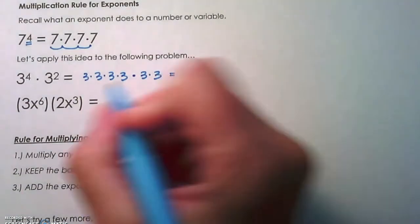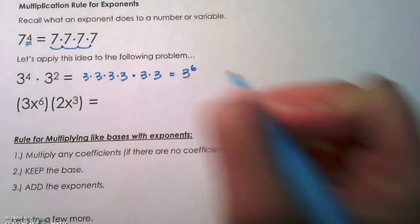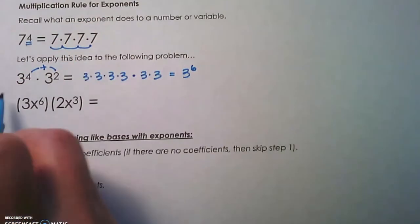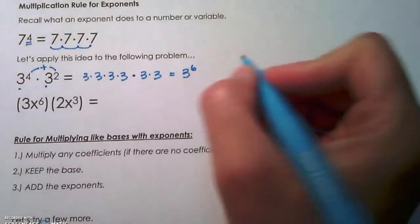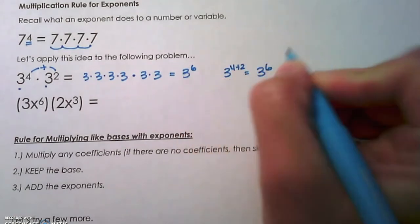Well, if we rewrite all of these numbers in exponential form, that's 3 to the 6th power. So you can see that our multiplication rule is when you're multiplying like bases, you add the exponent. So that's 3 to the 4 plus 2, which gives you 3 to the 6th.